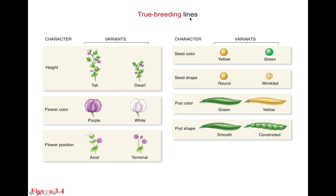Mendel used several true breeding plant lines. He realized that if he was going to set up crosses, he had to have lines of plants that produce the same phenotype, the same characteristics, generation after generation. He focused on a few different characteristics: height, flower color, seed color, and seed shape, and used those true breeding lines of plants to set up crosses.